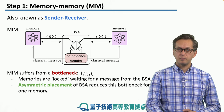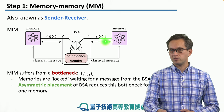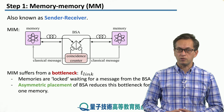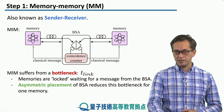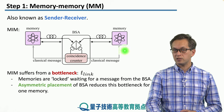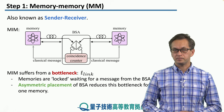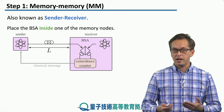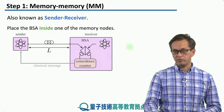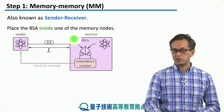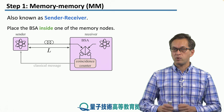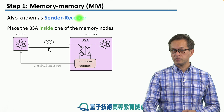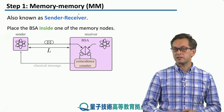Now, if we place the BSA not right in the middle, but closer to one of the memories, then one of the memories will not have to wait so long and will be able to act quicker, because the message from the BSA will reach it a little bit sooner. We can take this idea to its limit and place the BSA inside one of the memories, so all Bell-state measurements are happening locally inside one of the repeater nodes. This node then becomes the receiver of the photons, while the other node is still the sender.